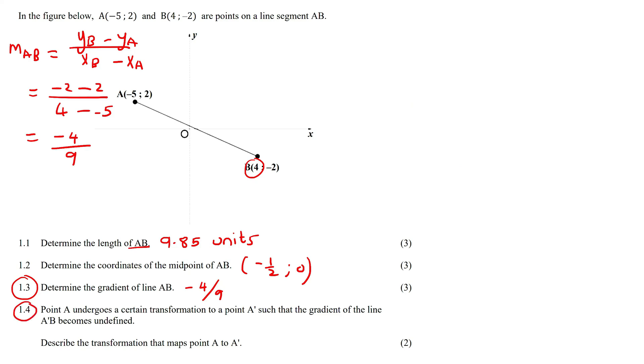This last one says point A undergoes a transformation to become the new point A prime, such that the gradient of the line from this new A to B becomes undefined. Describe the transformation. Let's talk about it.